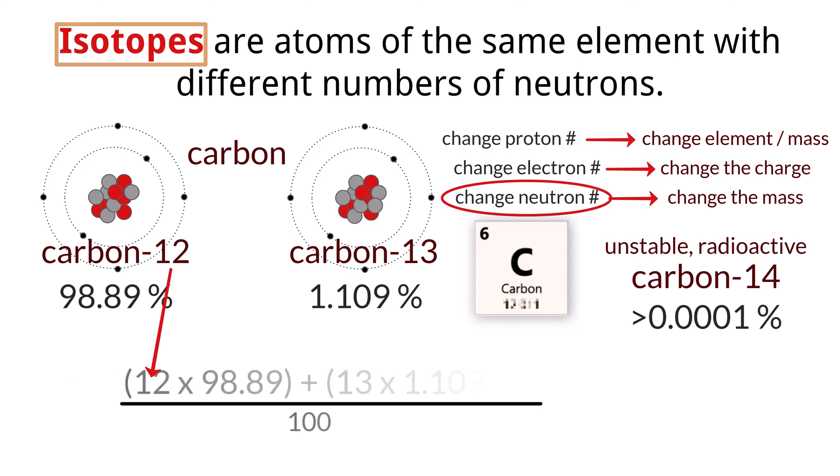So for carbon, we can take 12 times 98.89 plus 13 times 1.109, we leave out the unstable and negligible isotopes like carbon-14, and divide that by 100 to get a rounded answer of 12.011. And if we take a look at the periodic table, that is what we have for the atomic mass of carbon.